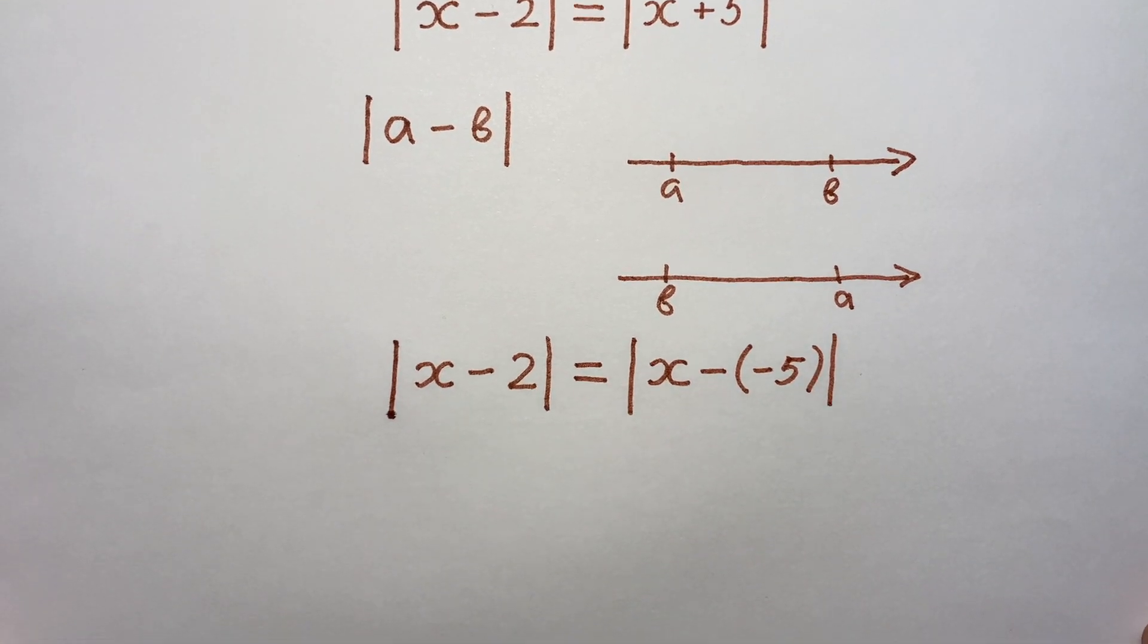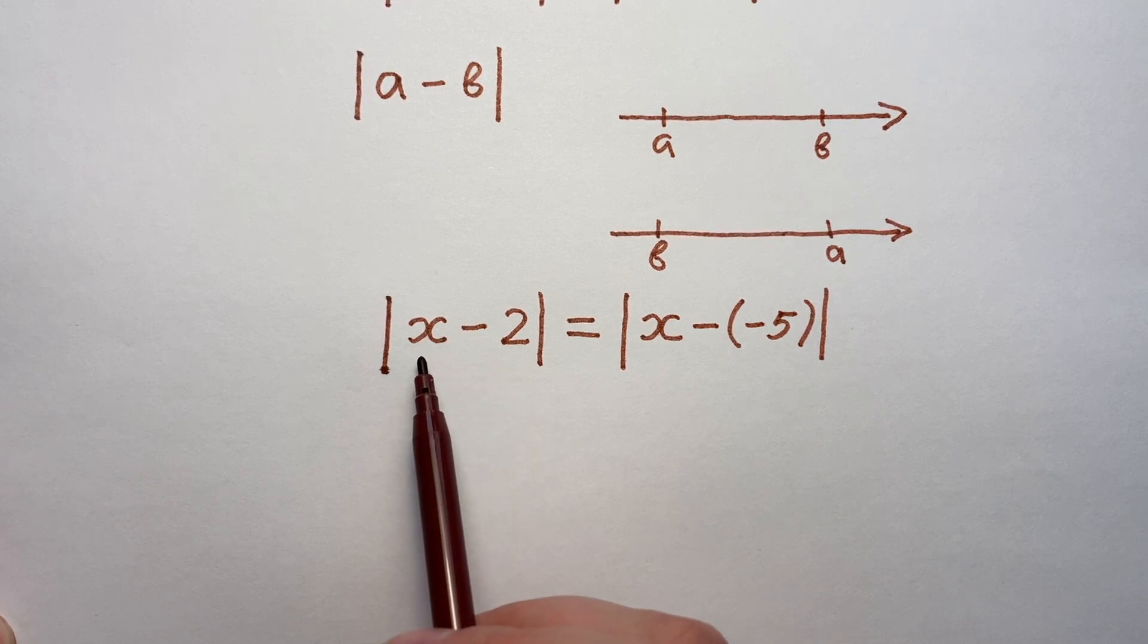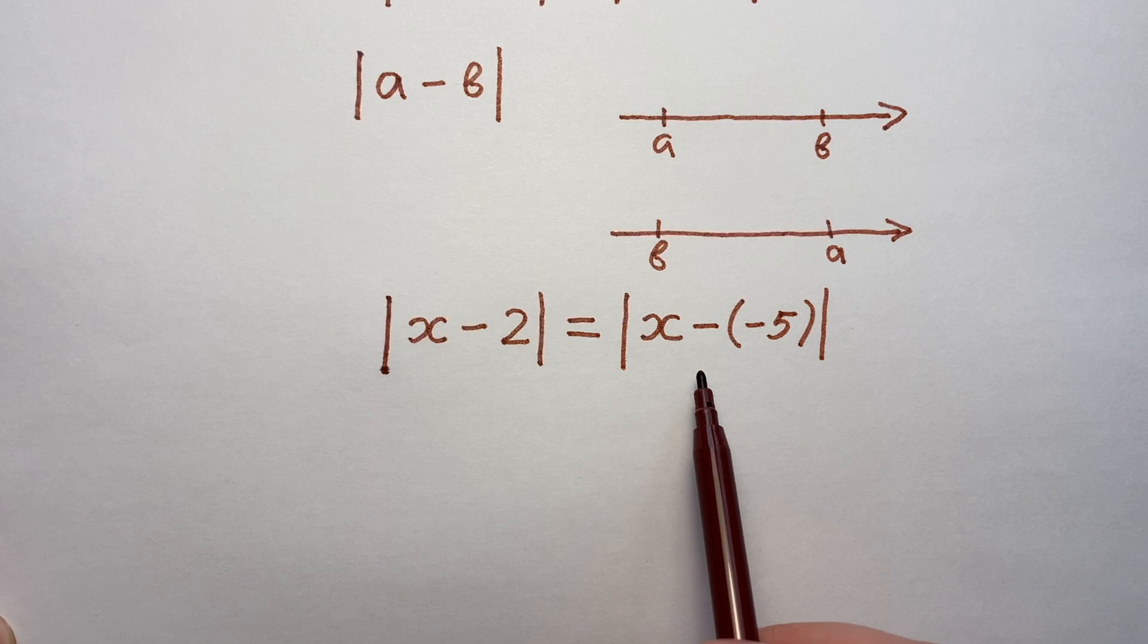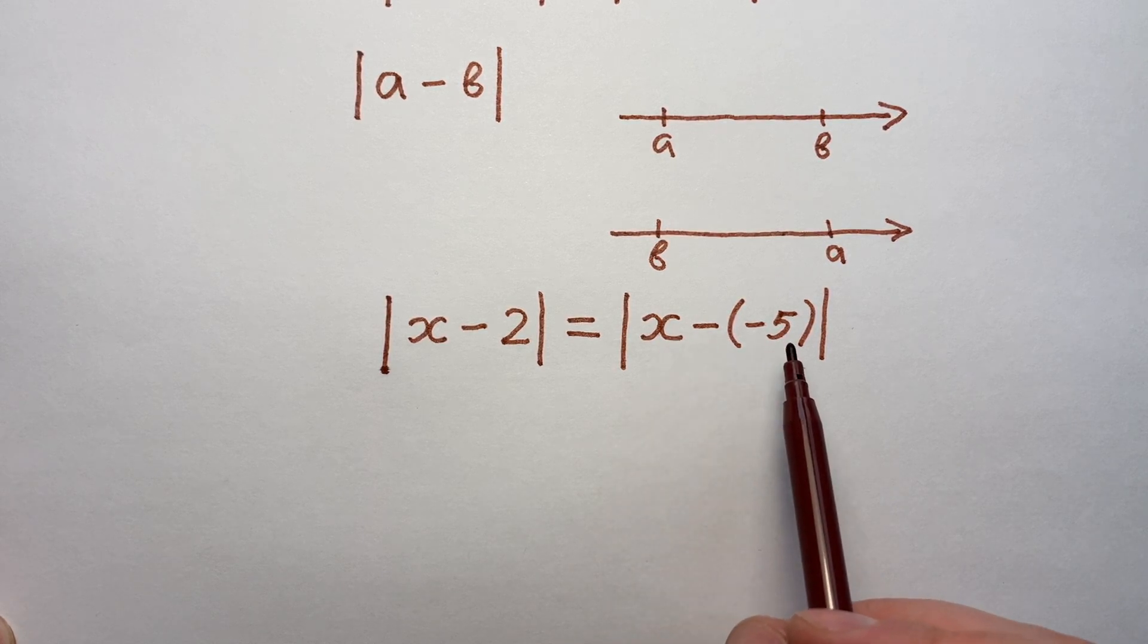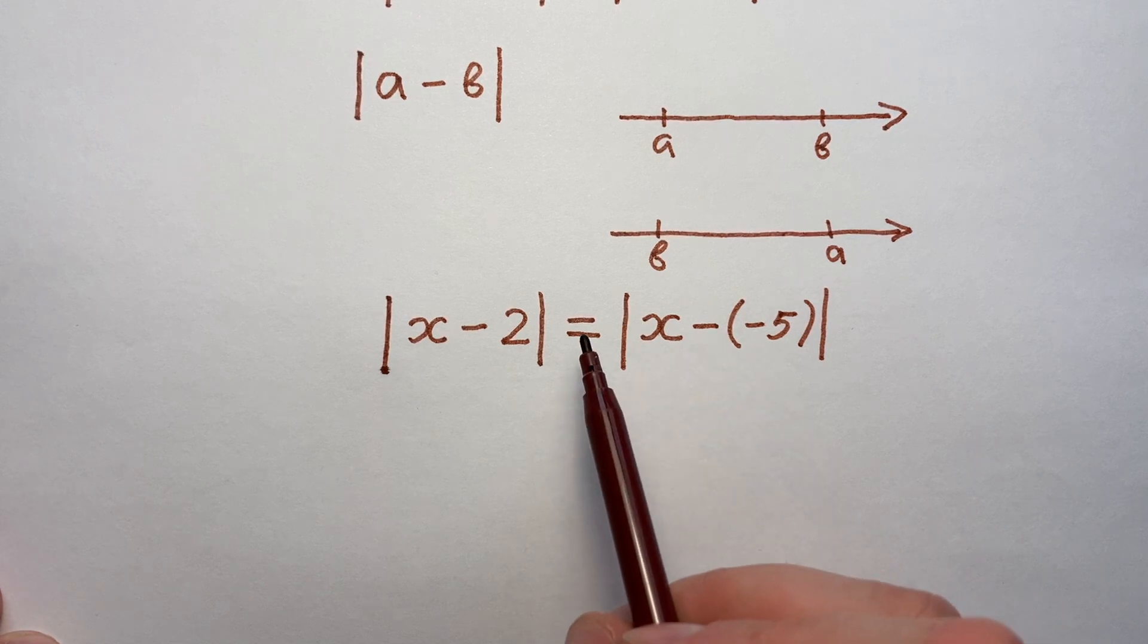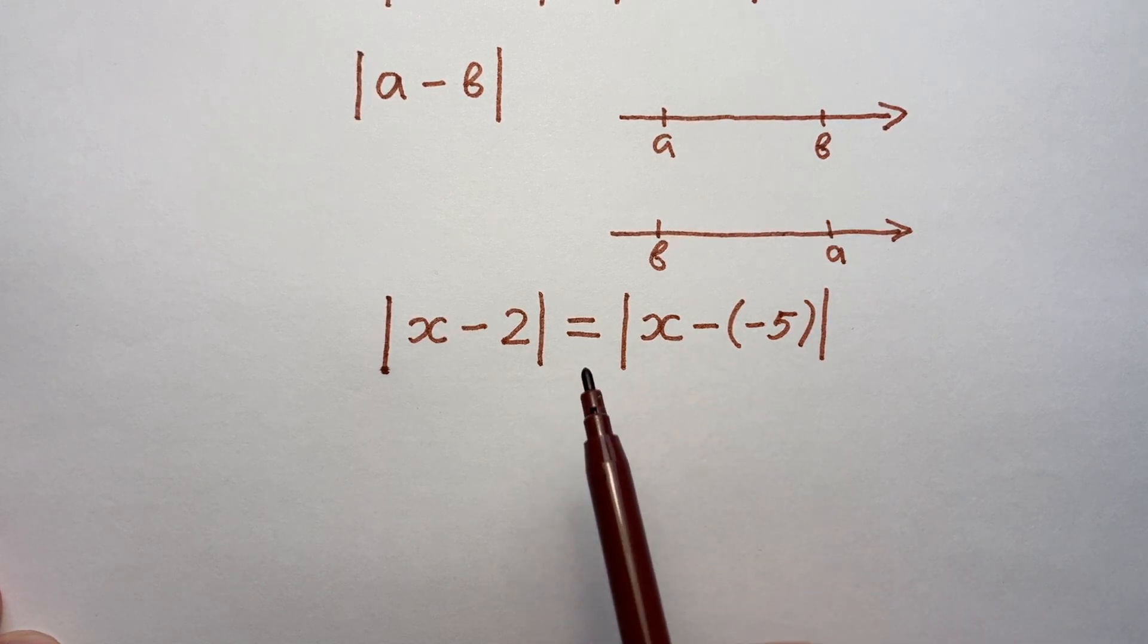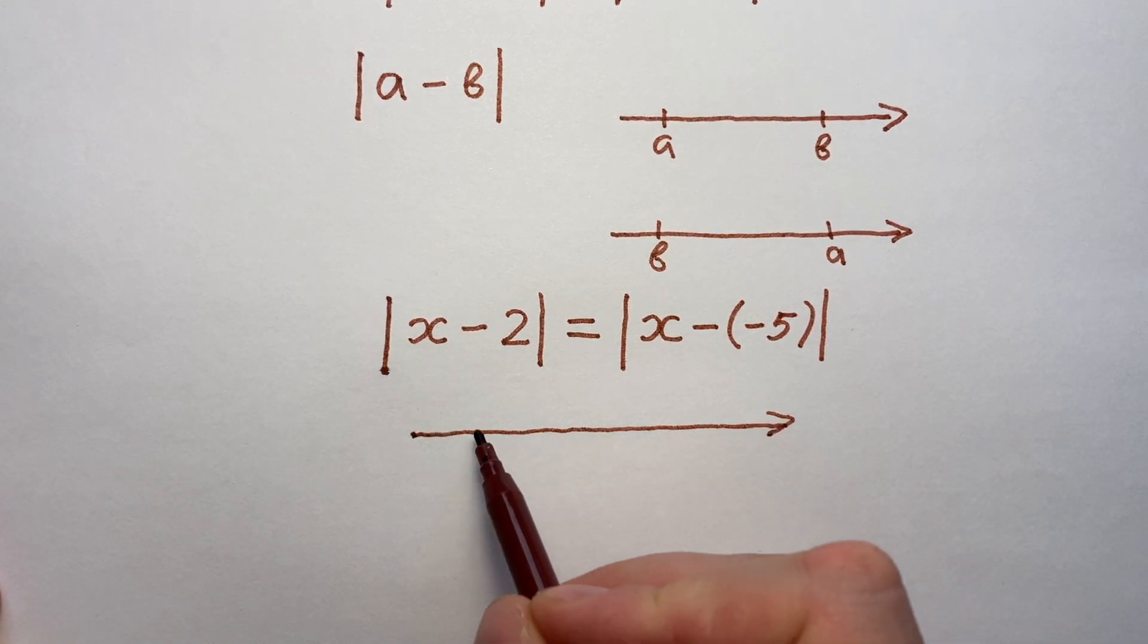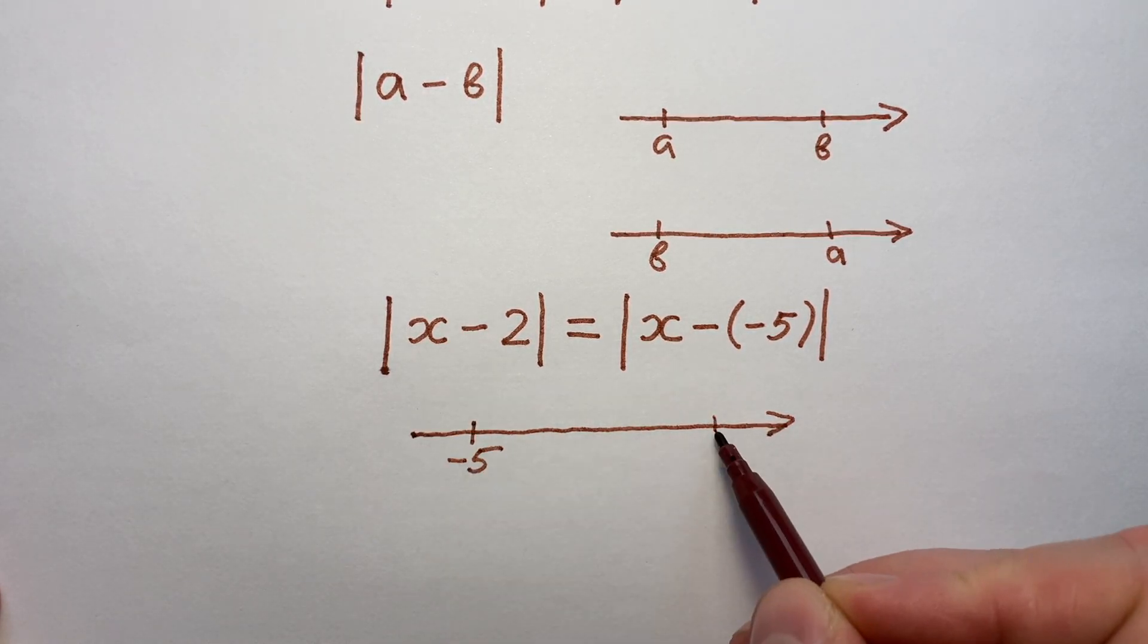Left side is a distance from point X to point 2. And right side is a distance from point X to point minus 5. And these two distances are equal. So, they should be the same.